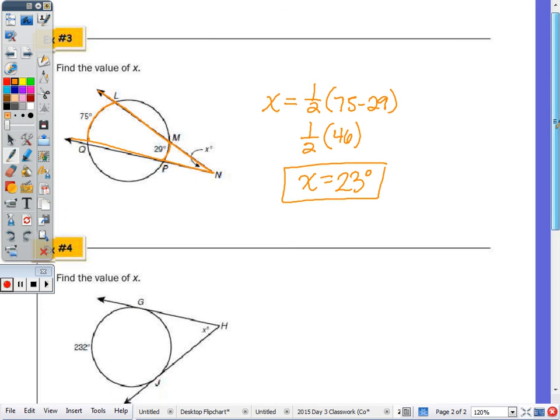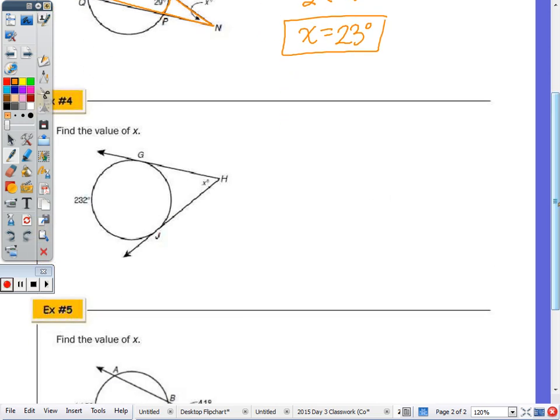Number four: find the value of X. It only gives me one of the arcs intercepted by this angle. The other arc goes from here to here. If I know there's a total of 360 degrees in the arcs of a circle, subtract the arc that's given, and the other arc must be 128 degrees.